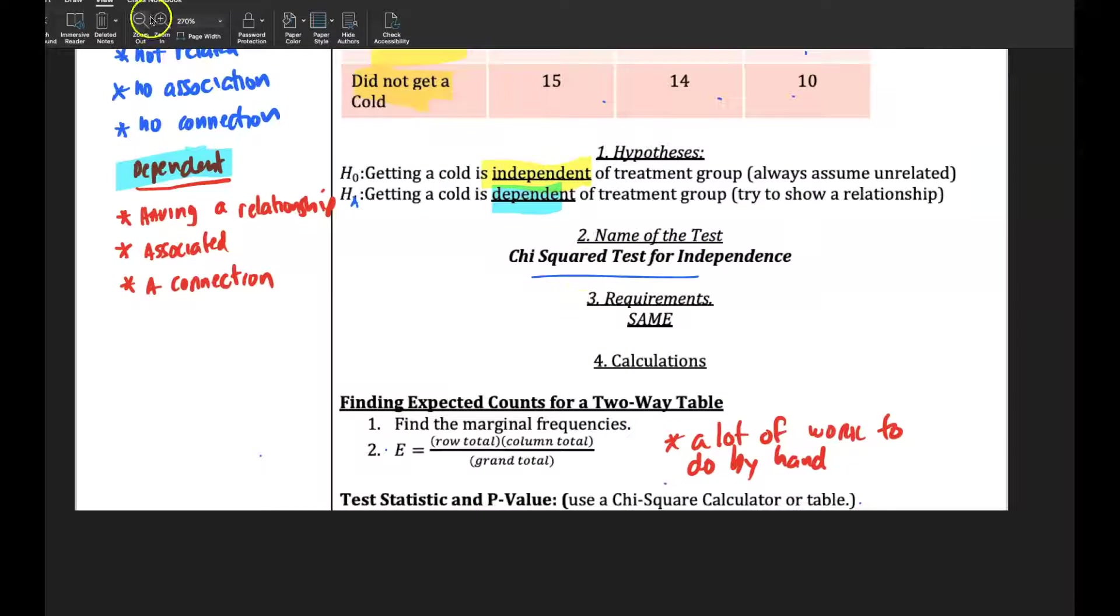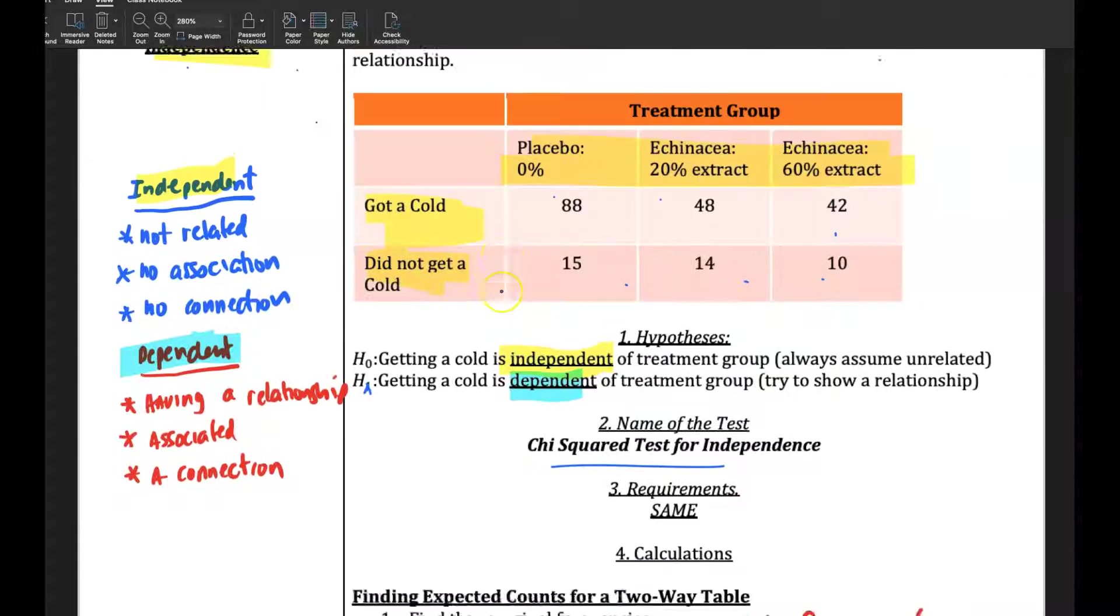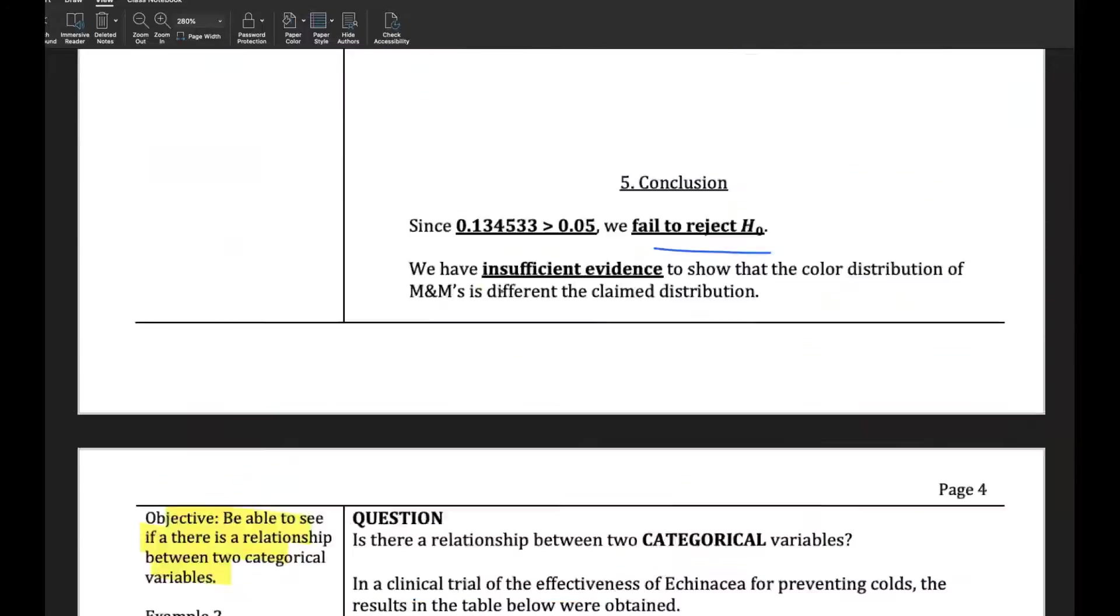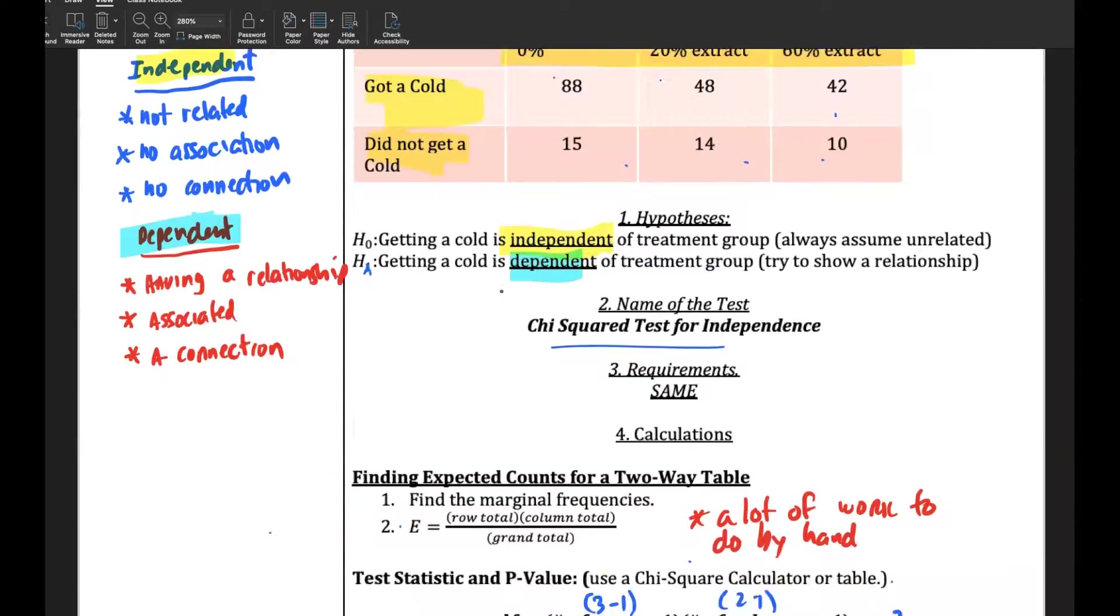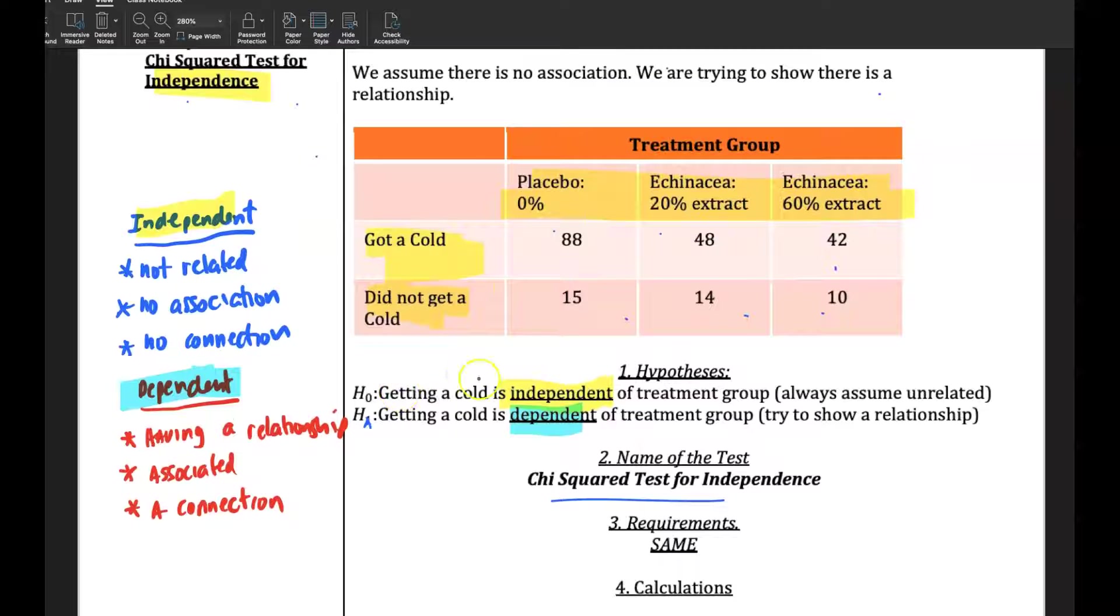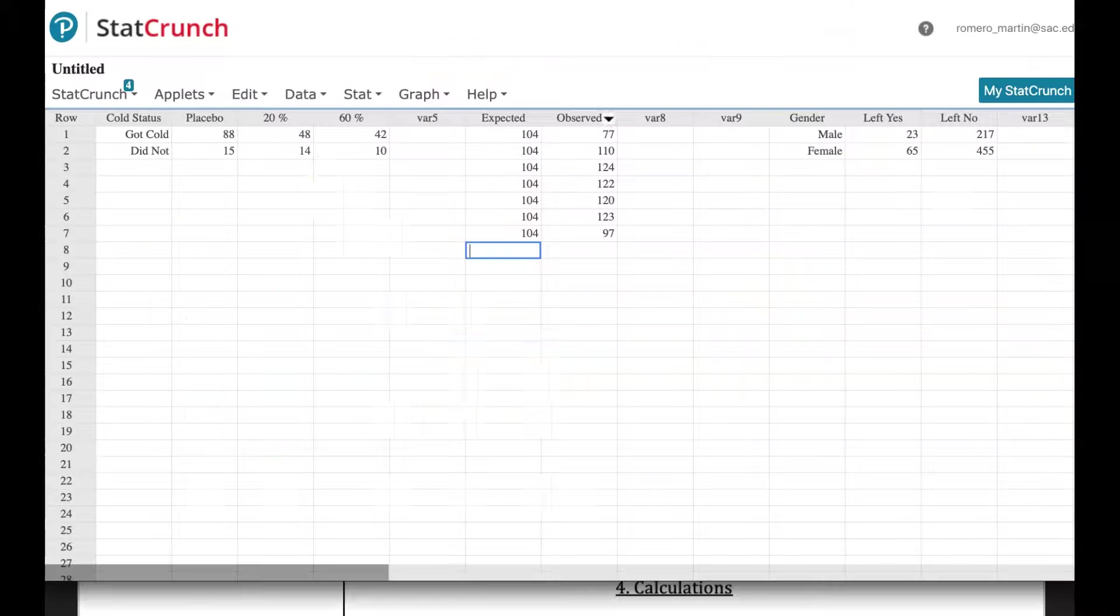And so we're going to run a test to see if, again, looking at our situation, the null hypothesis is that it's independent versus dependent, that there's some relationship or no relationship. So you go to StatCrunch and take a look at how this table gets entered in here.